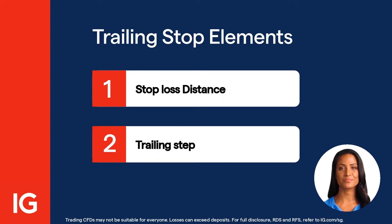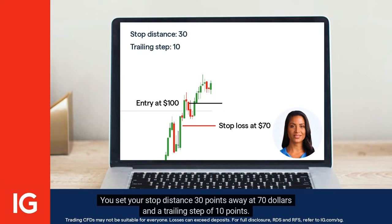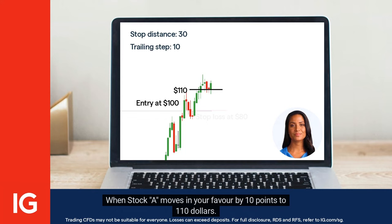Let's say you buy a position on stock A at $100. You set your stop distance 30 points away at $70, and a trailing step of 10 points. When stock A moves in your favor by 10 points to $110, this would trigger your trailing step, adjusting your stop loss to $80.